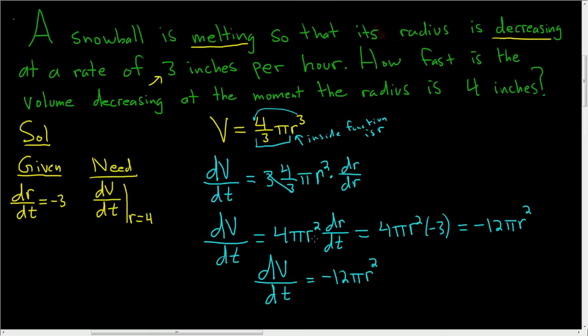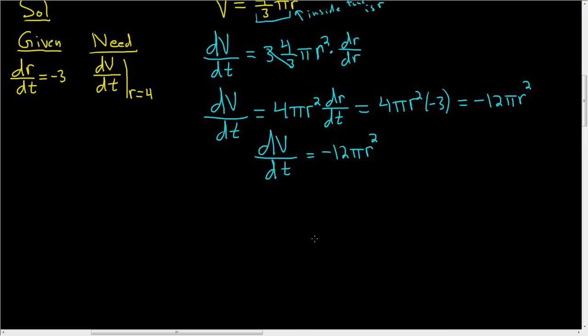We want dV/dt when r equals 4. So to finish, dV/dt when r equals 4 is equal to negative 12 pi times 4 squared.